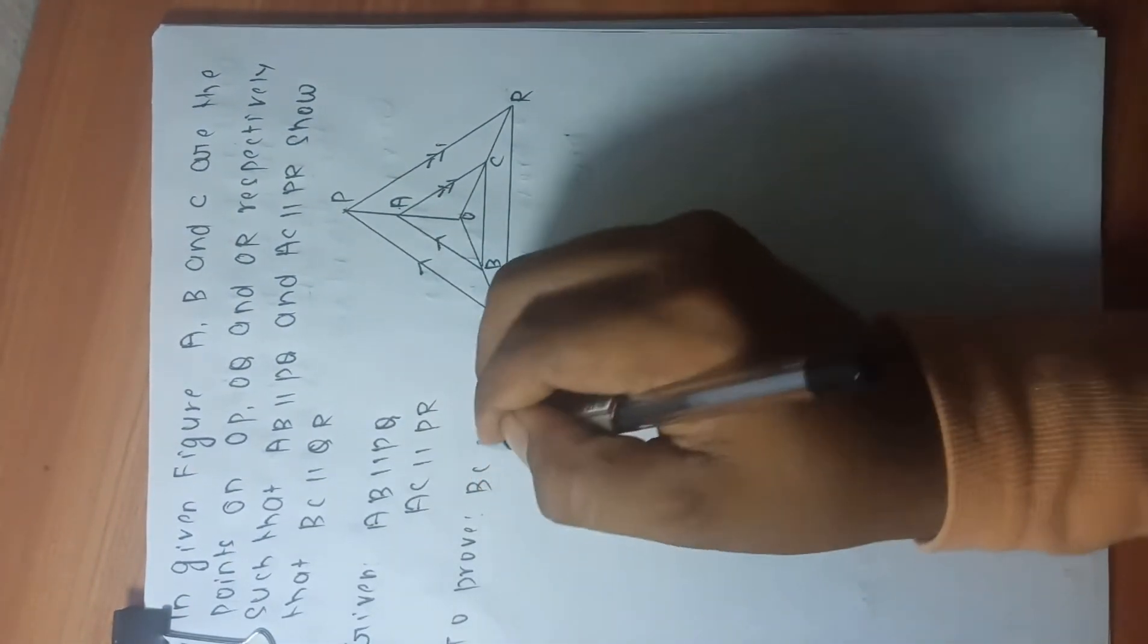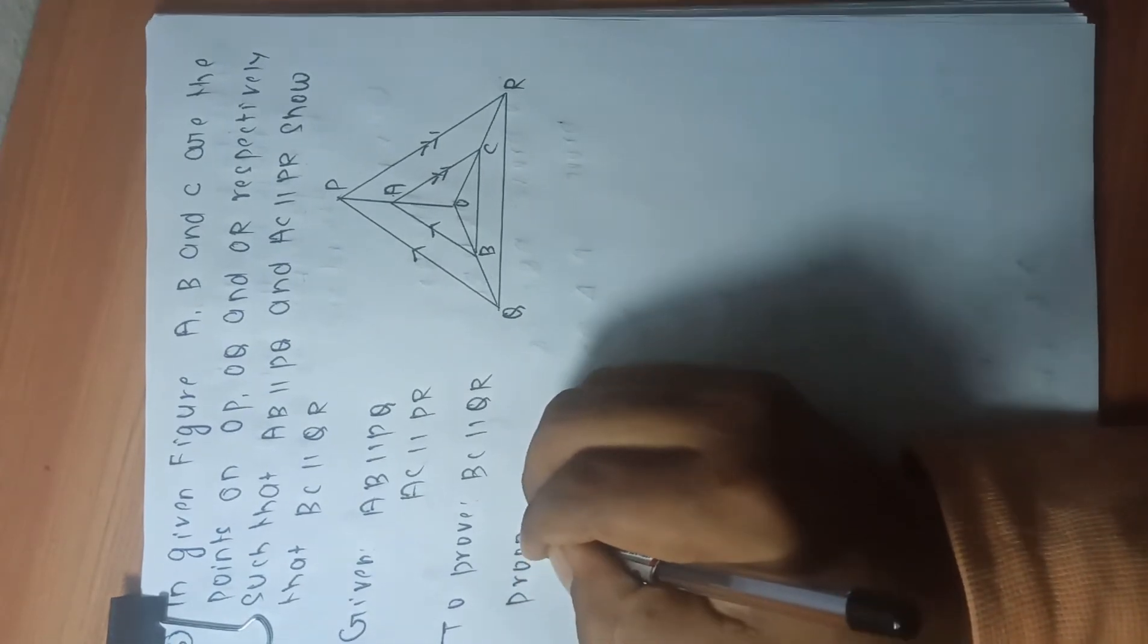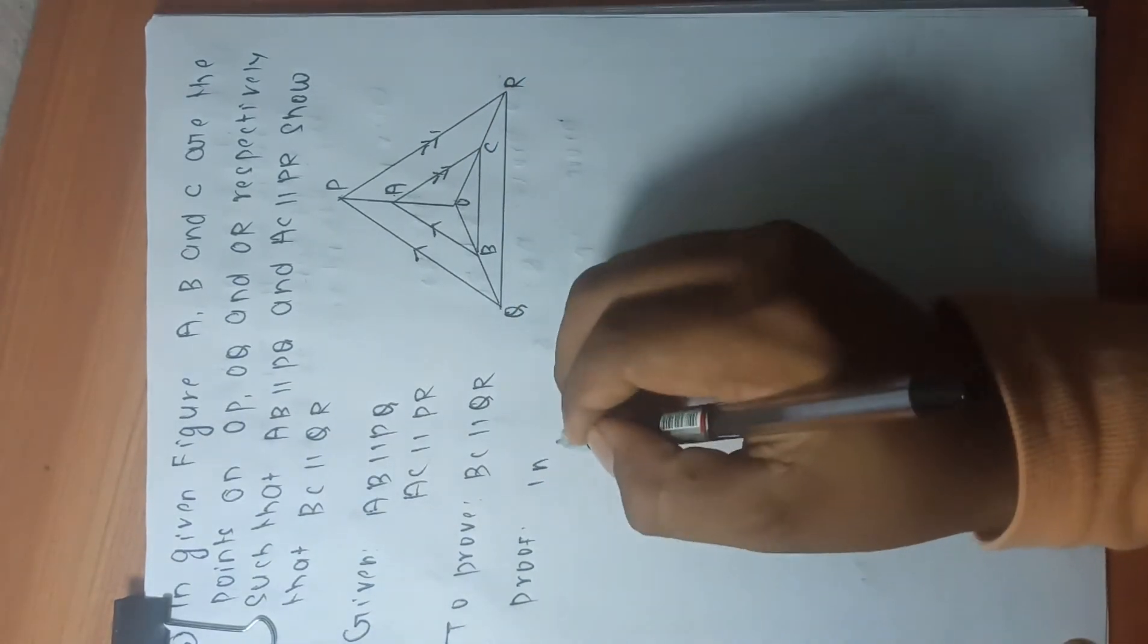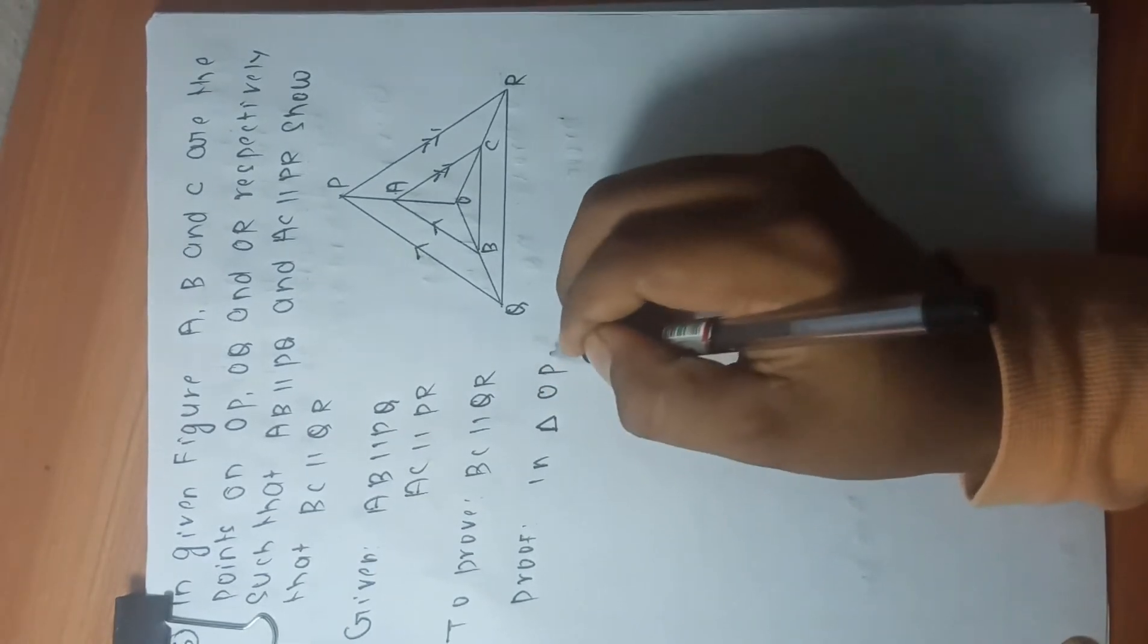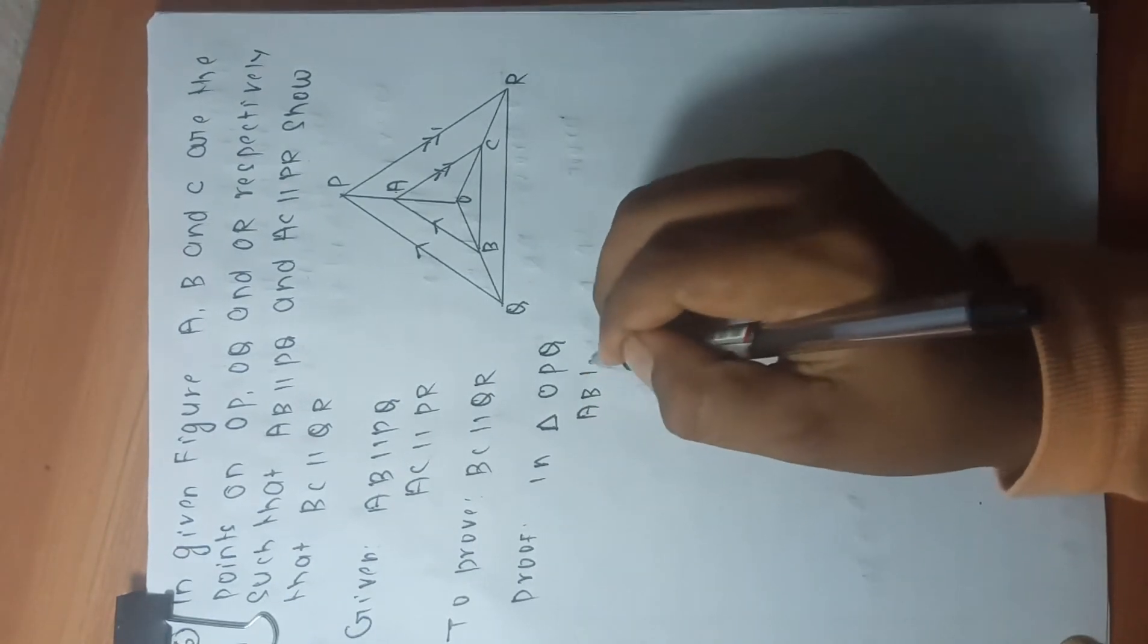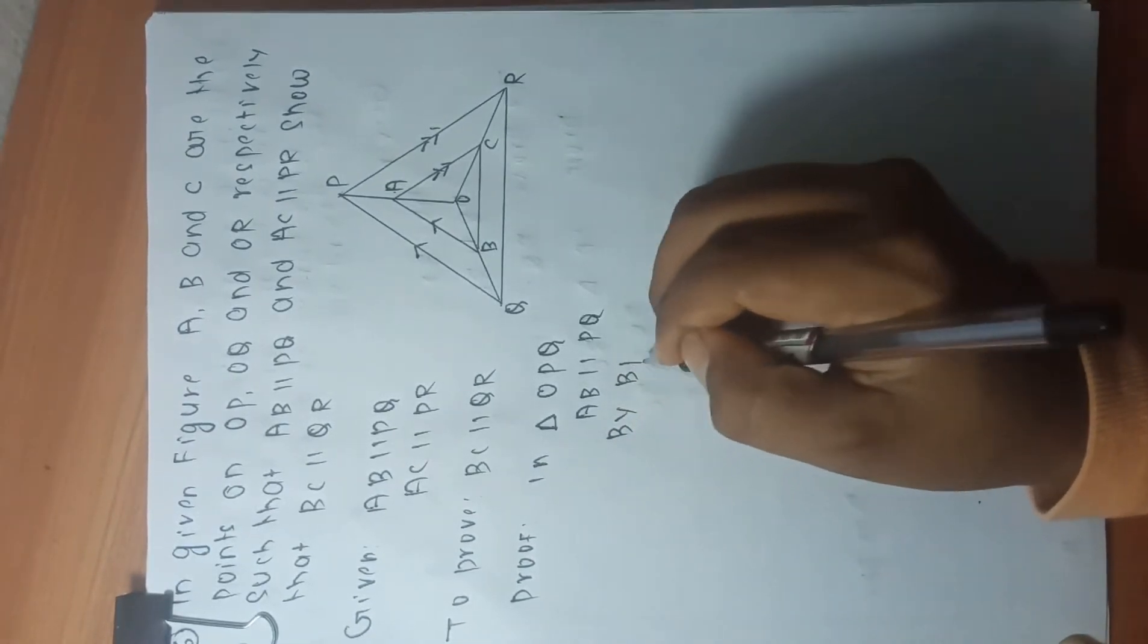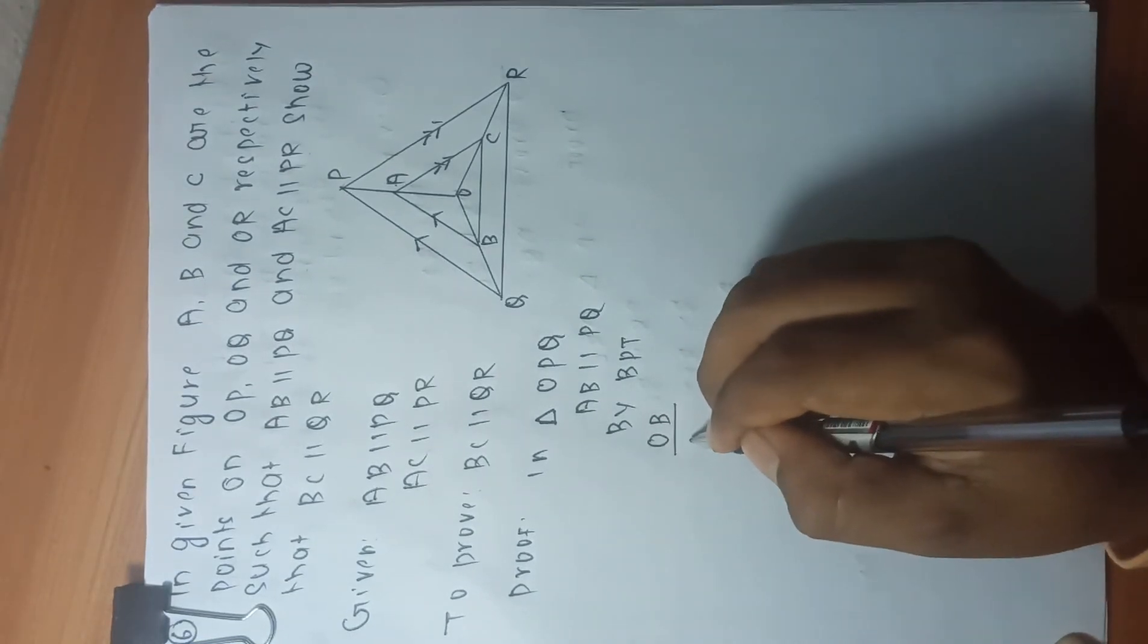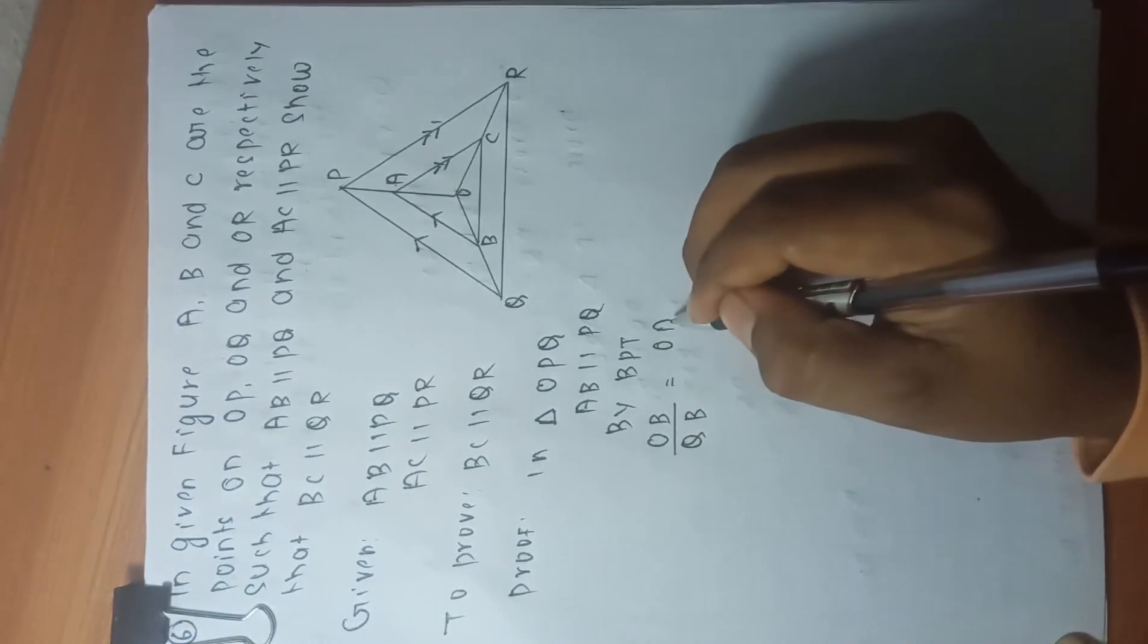In triangle OPQ, AB is parallel to PQ. So by BBT we can write OB by QB equals to OA by PA. This is equation number 1.